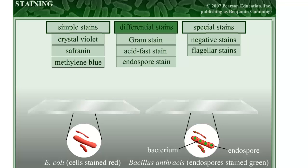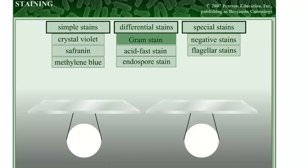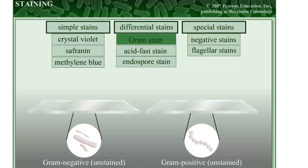Most of the stains used in microbiology are differential stains. Differential stains use more than one type of dye and can be used to distinguish between different structures. The gram stain is the most frequently used differential stain. It is used to distinguish between gram positive cells, which have a thick outer cell wall composed of peptidoglycan, and gram negative cells, which have a thin outer cell wall.